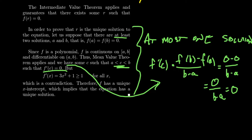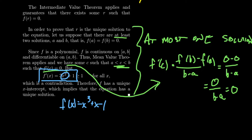But we know what our function is: f of x equals x cubed plus x minus 1. Taking the derivative by the power rule, f prime of x equals 3x squared plus 1. Now x squared is at smallest 0, and for any nonzero number its square is positive, so 3x squared plus 1 is at least 1 — probably bigger. In particular, the derivative is always positive because it's at least 1. This is our contradiction: the mean value theorem guarantees a point where the derivative equals 0, but in actuality the derivative can never equal 0.